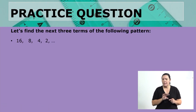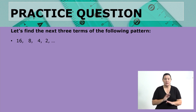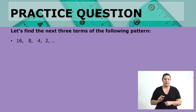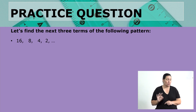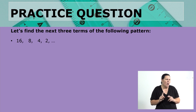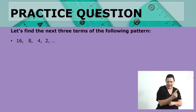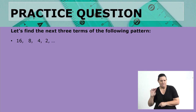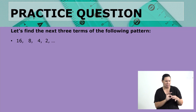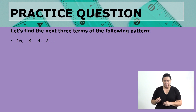The first question says: find the next three terms of the following pattern. The pattern is 16, 8, 4, and 2. Remember, to find the next three terms you need to investigate what is going on from the first term to the second term and to the third term. What relation do you see between the numbers? We have 16, then 8, then 4.